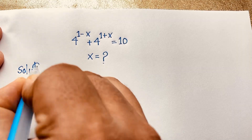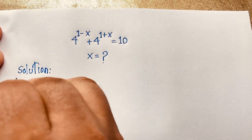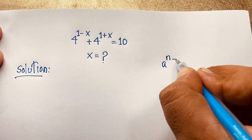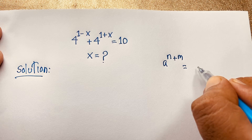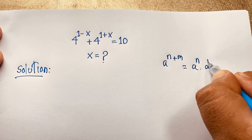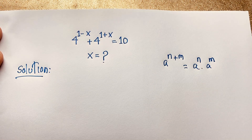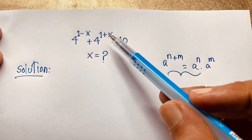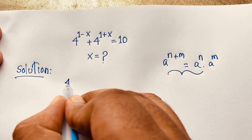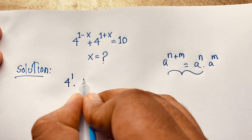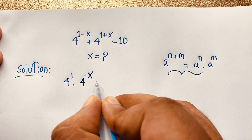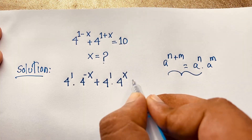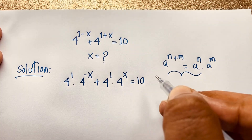Let's start. One rule is that e to the power (n plus m) equals e to the power n times e to the power m. According to this math formula, if I apply it here, it will be 4 to the power 1 times 4 to the power (minus x), plus 4 to the power 1 times 4 to the power x, is equal to 10.